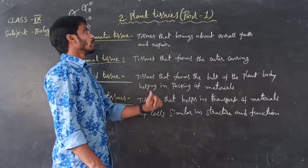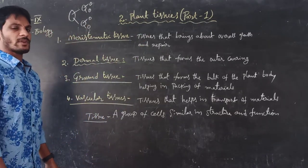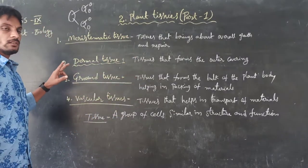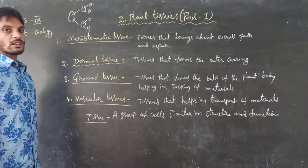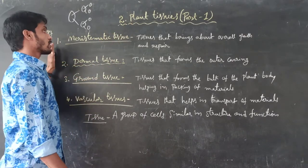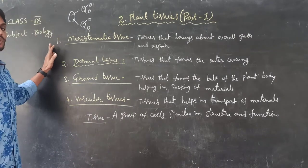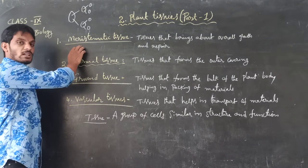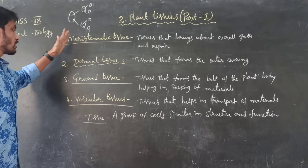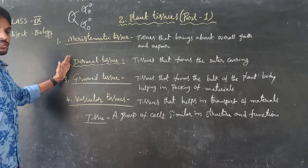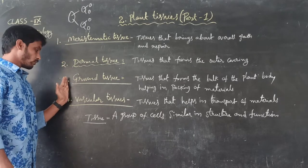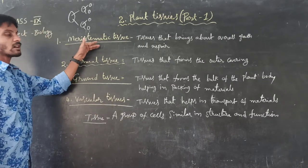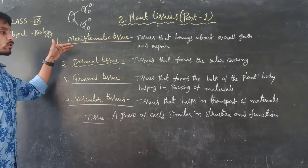In plants also, tissues are present. If you observe plants, four main types of tissues are present: first, meristematic tissue; second, dermal tissue; third, ground tissue; and fourth, vascular tissue. These are the four main types of tissues present in plants.